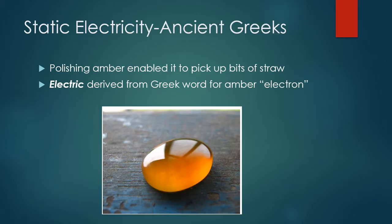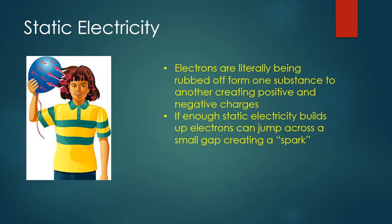We're going to focus in this chapter on static electricity. Back in ancient Greece, they discovered static electricity when they were polishing an amber stone. They realized that polishing this amber stone enabled it to pick up pieces of straw, because of the static electricity created by the friction of polishing. The word 'electric' is derived from the Greek word for amber, which is 'electron.'